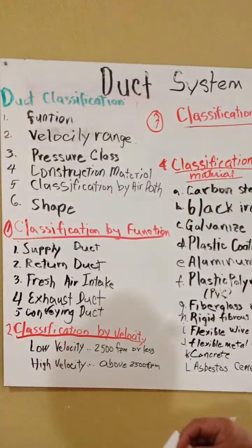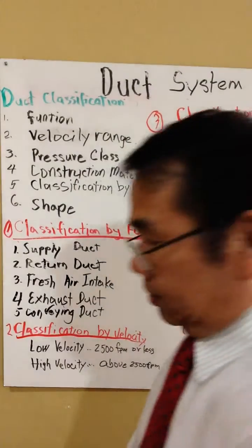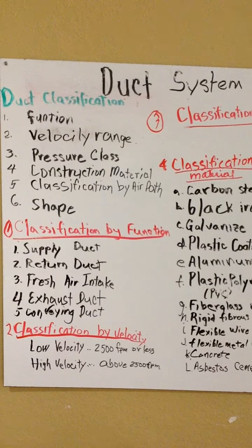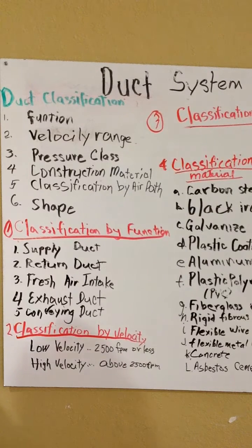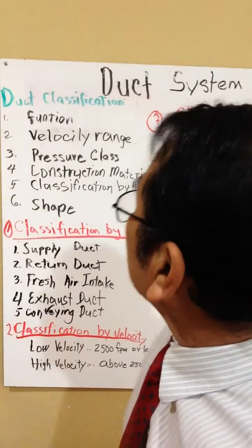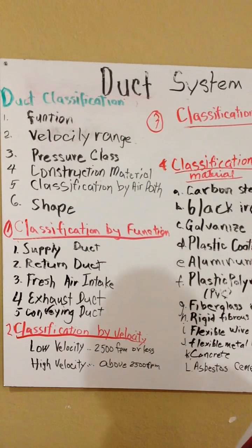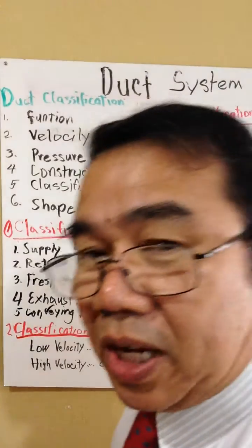The first chapter we're going to talk about will be duct system classification. We can classify the ducts according to the function, the velocity range, the pressure class, the construction material, the classification by air path, and then the shape of the duct.